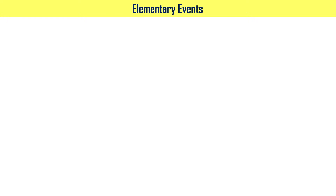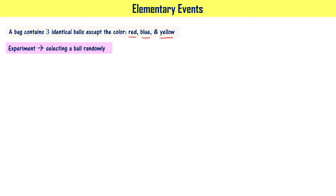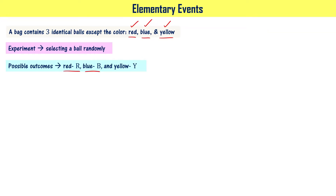Let us consider another example. A bag contains three identical balls except for the color. The balls are the same in weight, size, and shape — identical — but the colors are different: red, blue, and yellow. We are going to conduct an experiment where you select one ball at random. When you select randomly, you don't know whether you are picking a red, blue, or yellow color ball.